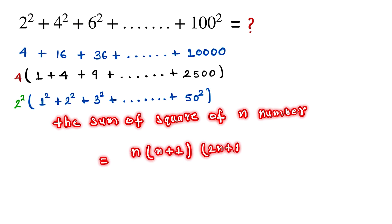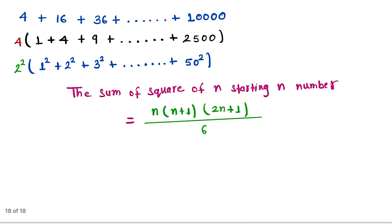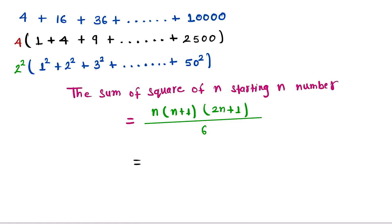So 50 × (50+1) × (2×50+1) divided by 6. This gives us 50 × 51 × 101 divided by 6.